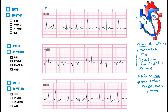Looking at this top EKG in lead II, let's determine the rate. We have a six-second rhythm strip, so we multiply the number of R waves by 10. Counting: one, two, three, four, five, six, seven, eight — eight times ten is 80 beats per minute.